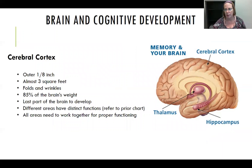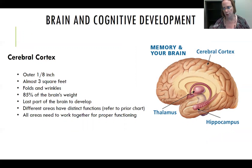There are some general facts about the cerebral cortex worth briefly covering. The cerebral cortex is the outer one-eighth inch of the brain. If we were to unfold it, it covers almost three square feet — roughly the size of a seven or eight-year-old. It is the area we think of as all the folds and wrinkles. It is 85% of the brain's weight, the last part of the brain to develop, and while different areas have distinct functions, all areas need to work together for proper functioning.